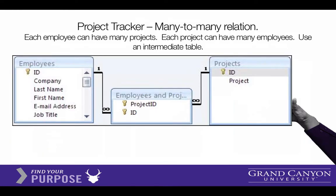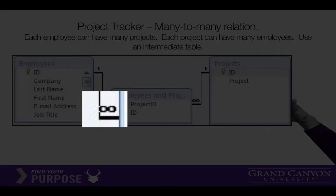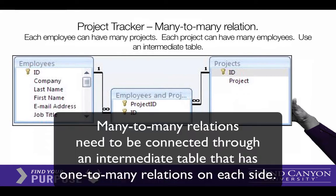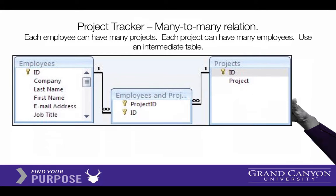Here's another illustration of an app called Project Tracker. If you were to keep track of what employees are working on, you notice we have a many-to-many relationship here. There are many employees and many projects — one employee can be involved on multiple projects and a project can have multiple employees. To solve the many-to-many relationship issue we always see this same pattern: an intermediate table. This one is simply called employees-and-projects and it allows you to tie these two tables together.